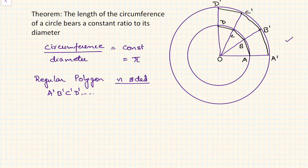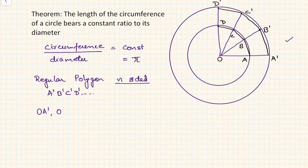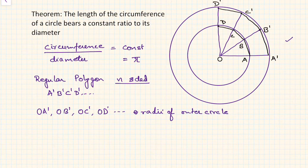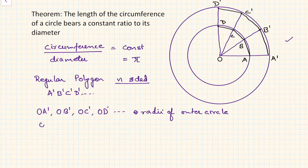Let us say OA', OB', OC', and OD' are all radii of the outer circle. Similarly, OA', OB', OC', and OD' cut the inner circle at points A, B, C, and D respectively. So OA, OB, OC, and OD are radii of the inner circle.